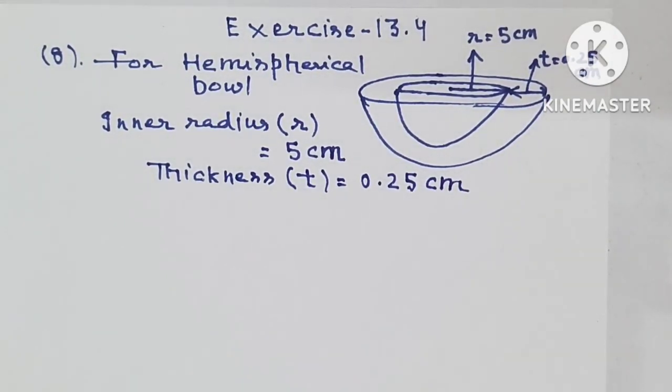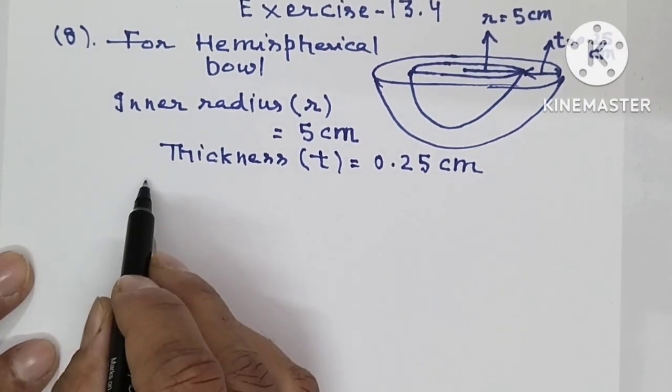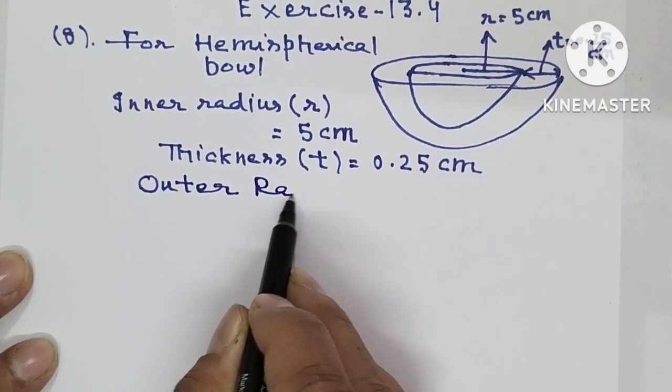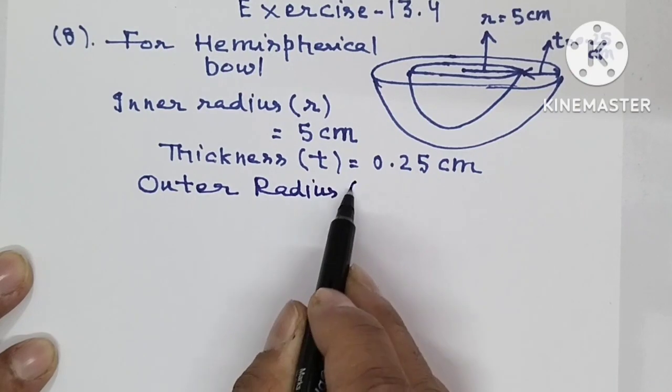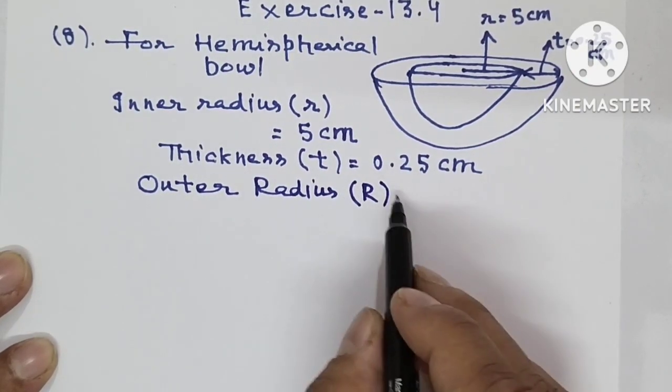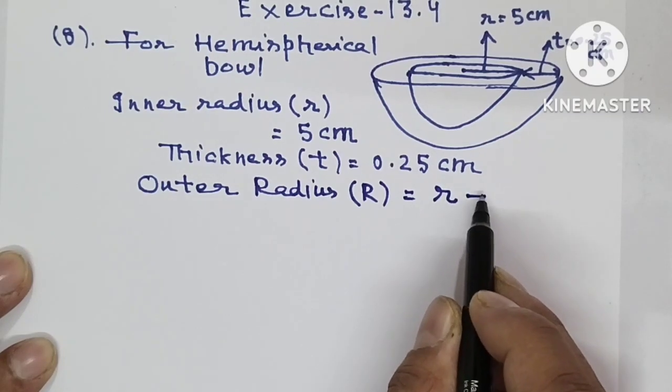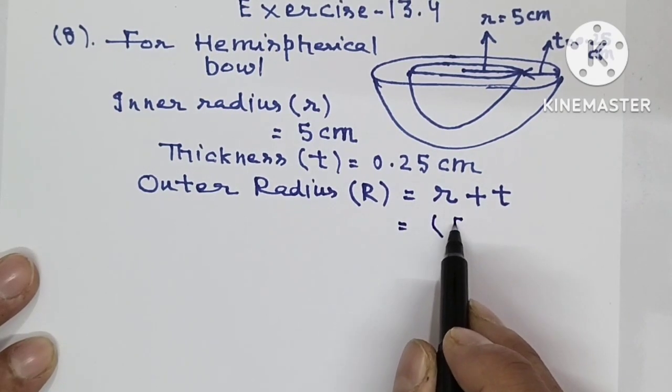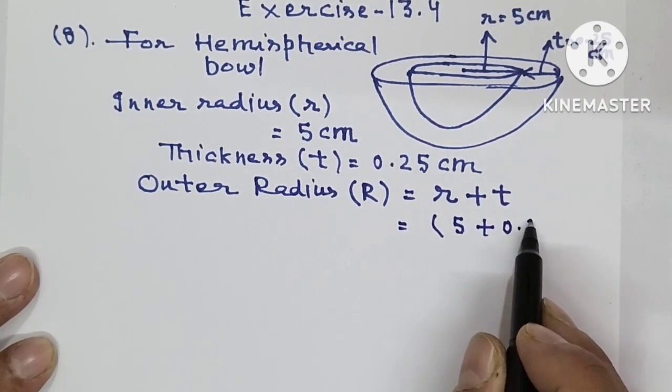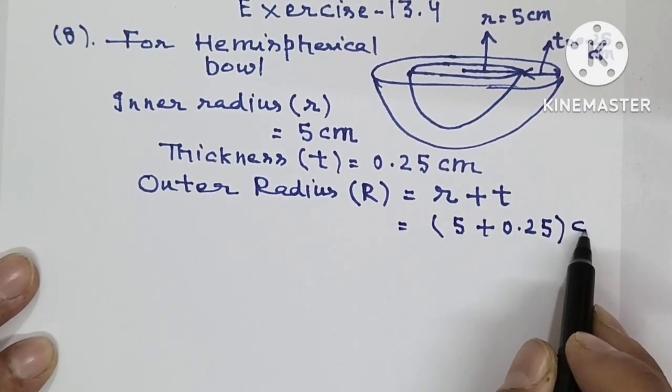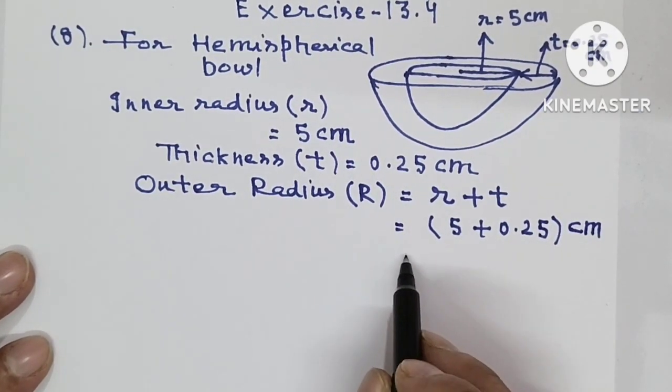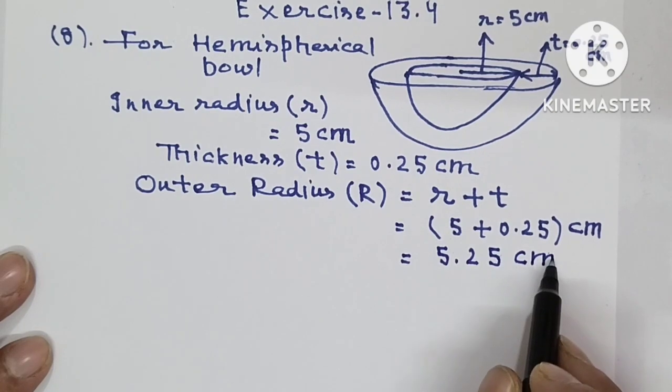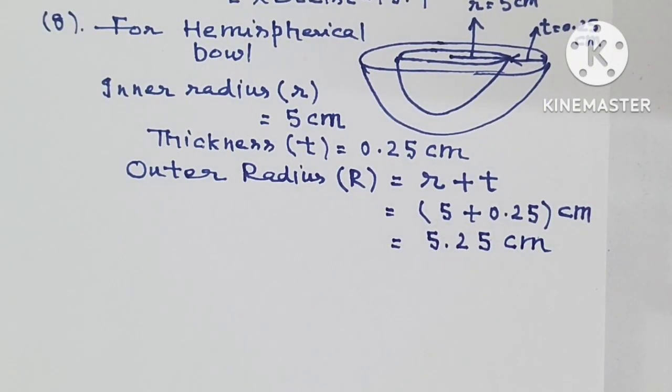We can find from here outer radius. We are denoting the outer radius by capital R. Outer radius is equal to small r plus t, means inner radius plus thickness. How much is the inner radius? 5. Thickness is 0.25. If you add these, you will get 5.25 centimeter. So we have found outer radius.